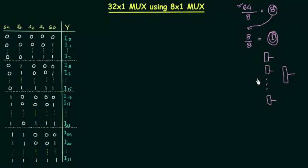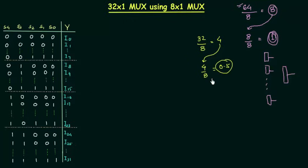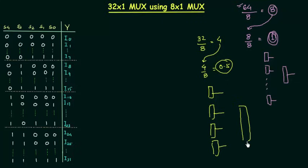This is a very simple conversion, but if we try to do the same thing for a 32x1 MUX: 32 divided by 8 gives us 4, and 4 divided by 8 gives us 0.5. We don't have a whole number in the last division. This shows that we need 4 8x1 MUXes. The output of those 4 MUXes would go to only 4 inputs of the last 8x1 MUX, leaving the remaining 4 inputs floating — and this is not what we want.